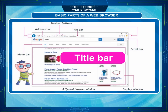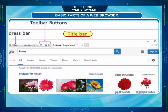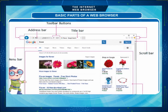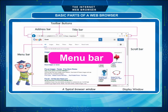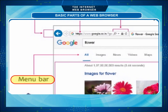Title Bar: The title bar is at the very top of your browser window. You can see the title of the web page there. Menu Bar: The menu bar contains the various menu options in some browsers.